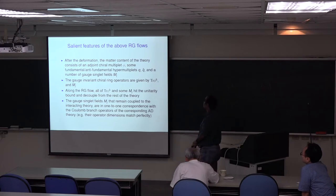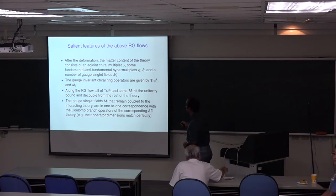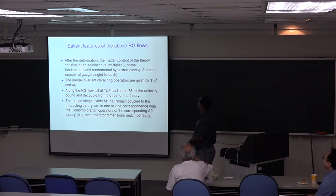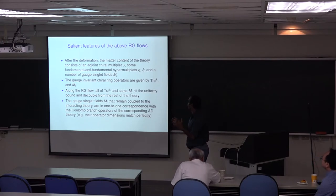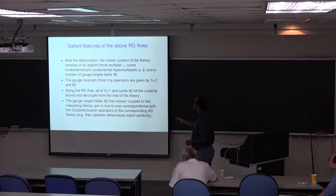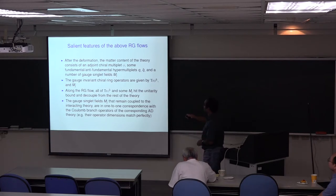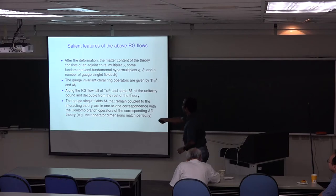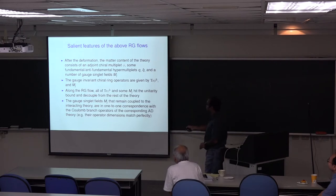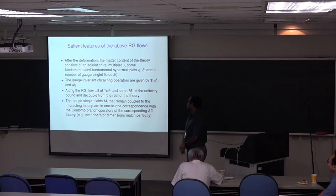The salient features of the RG flow are the following. After deformation, the matter content of the theory consists of an adjoint chiral field phi — which was a scalar in the vector multiplet of the gauge group — some fundamental and anti-fundamental hypermultiplets q and q-tilde, and a number of gauge singlets m_j. The gauge invariant chiral ring operators are given by tr(phi^k) and m_j. We find that along the RG flow, all of these tr(phi^k) get decoupled, and some of the m_j's hit the unitarity bound. The gauge singlet fields m_j that remain coupled to the interacting theory are in one-to-one correspondence with the Coulomb branch operators of the corresponding Argyres-Douglas theories.